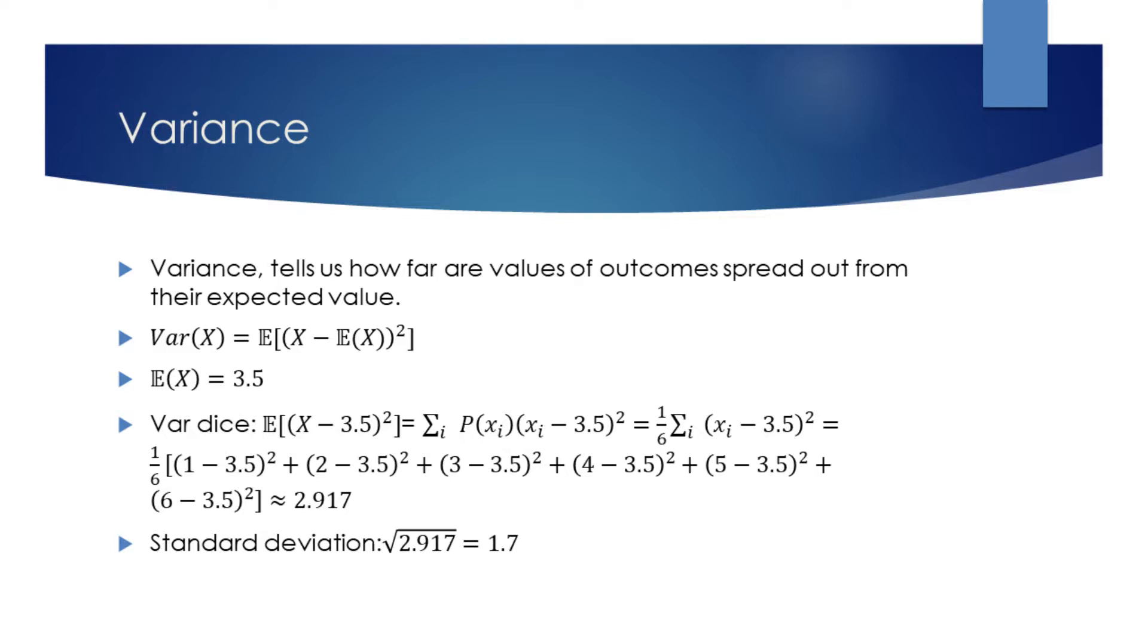We already know that the expected value for a fair dice roll is 3.5, so we can readily substitute it in the formula. We also know that the probability of every outcome is the same and equals 1/6.